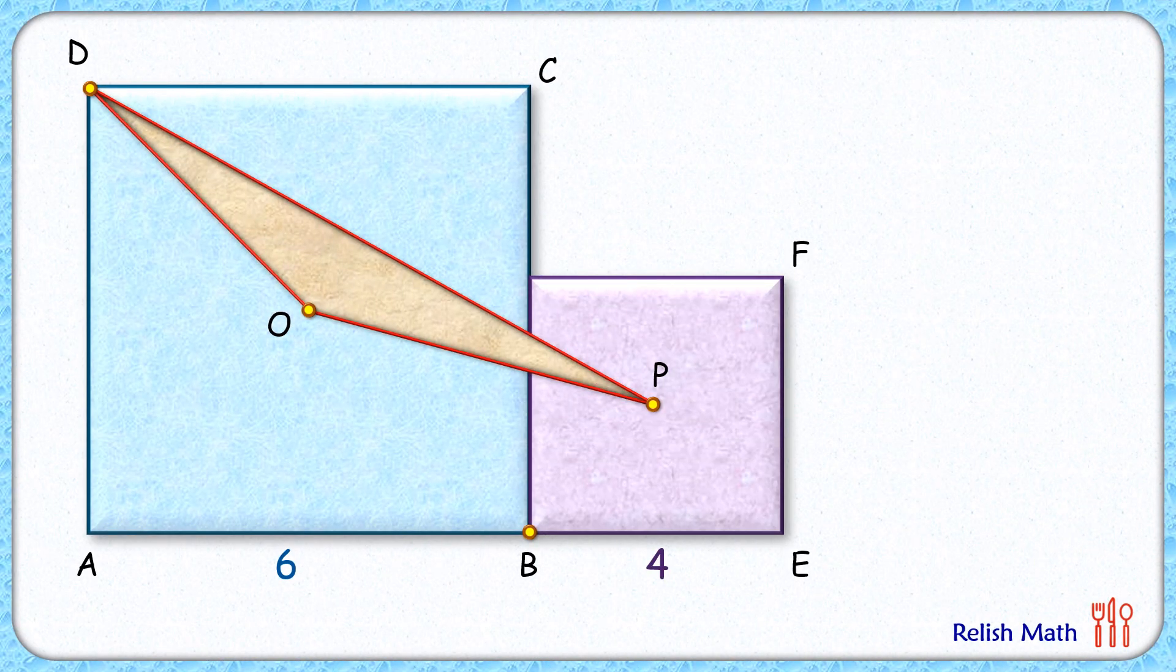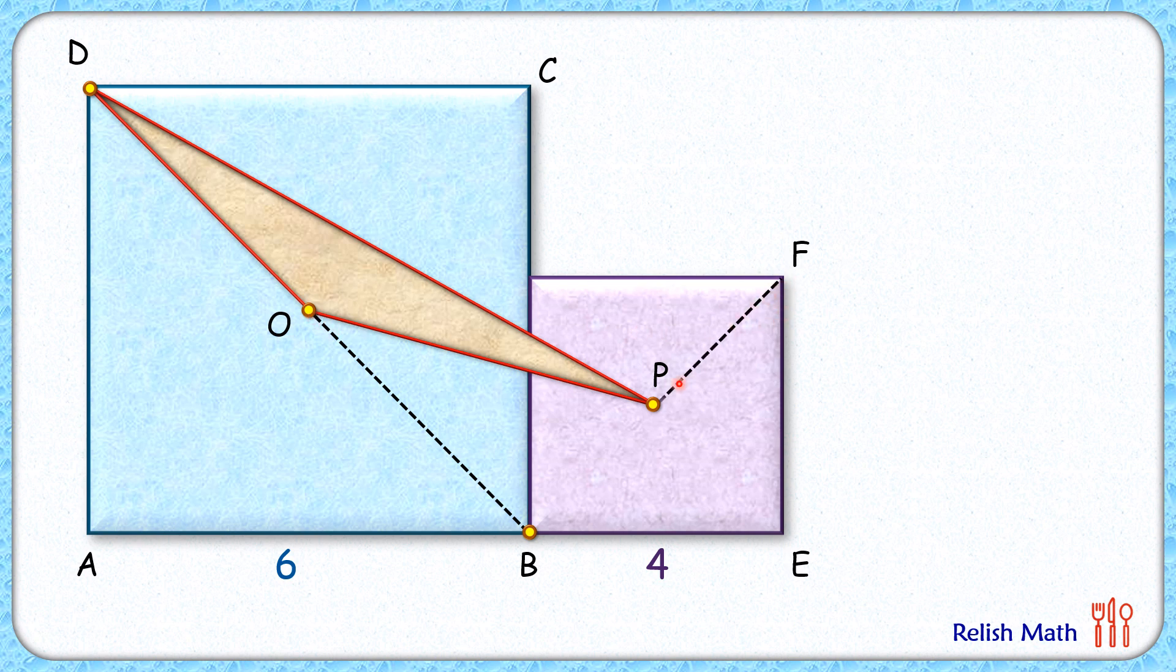Let's check this beautiful solution. Let's start by drawing the diagonals of the squares. So here we are drawing the diagonal DB which will pass through the center O and diagonal FB.